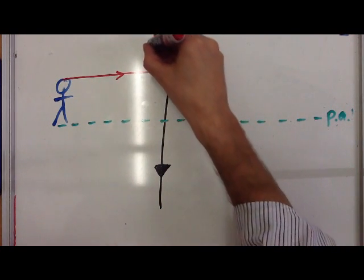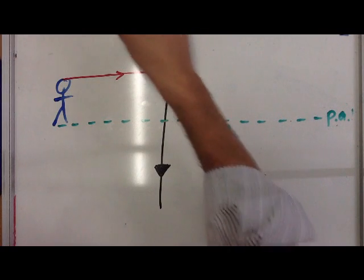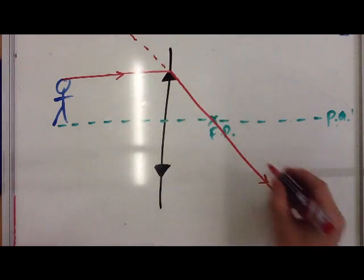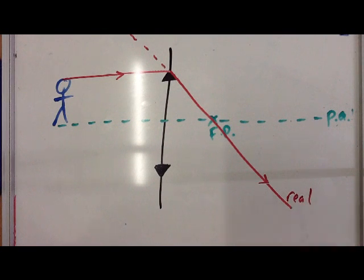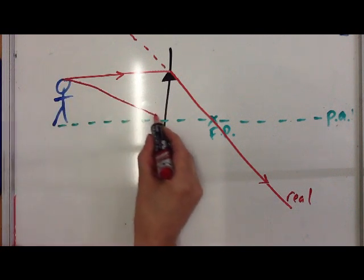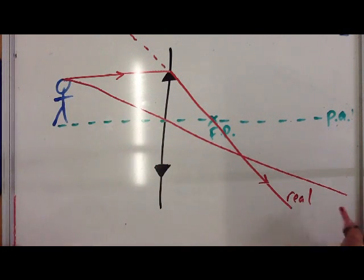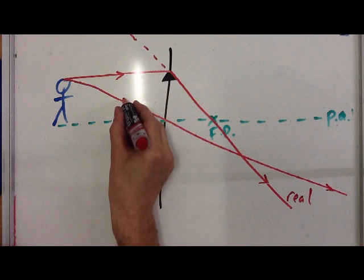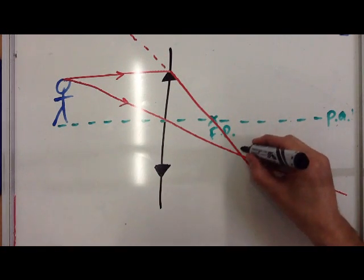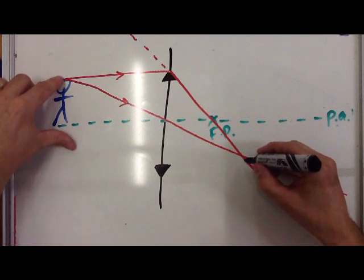If I want to, I can continue that path over here, but this bit is virtual and this part of the line is real because it's really there. The second rule we always follow is we go from the top of the object through the centre and continue straight. Where these two lines meet, we get our image. The top of the image is where these two lines both meet.